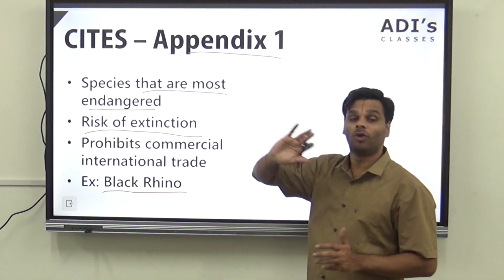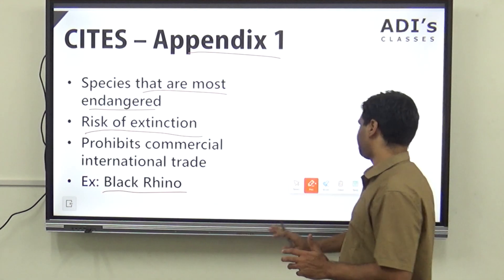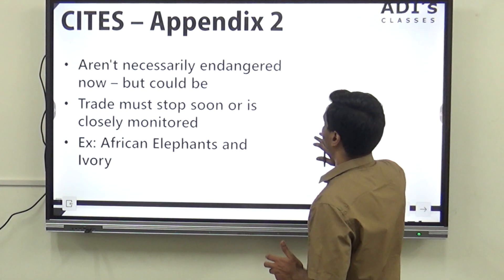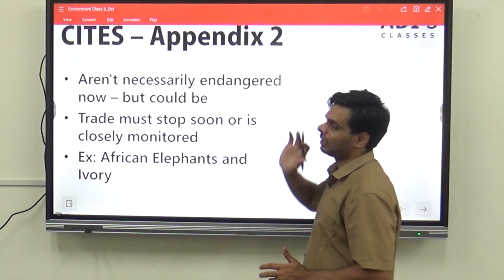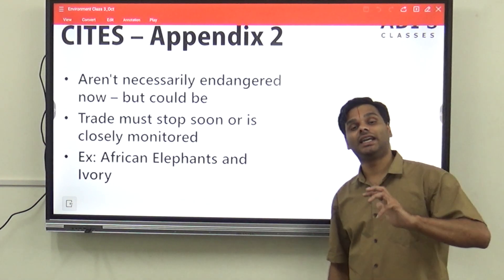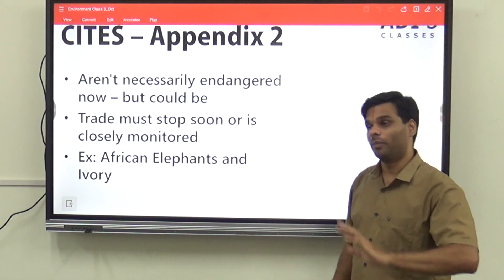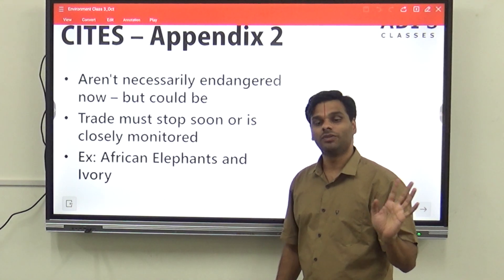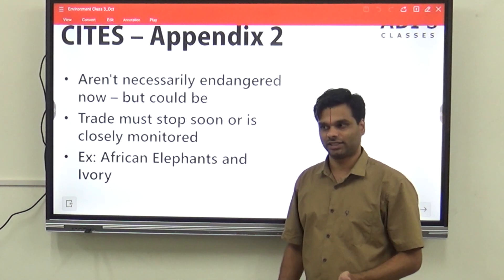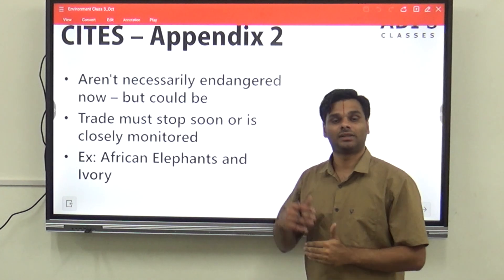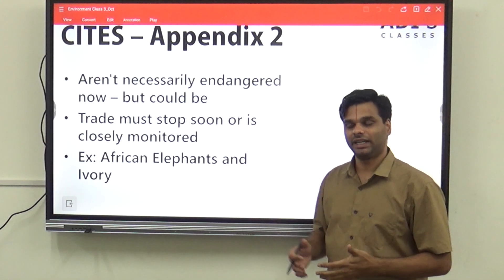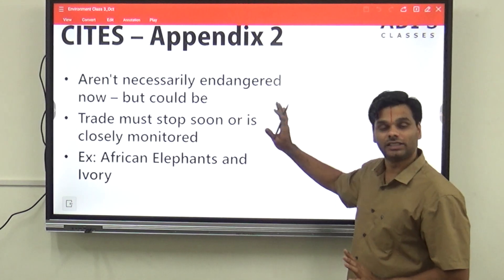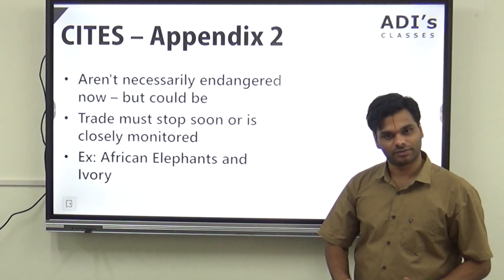Appendix one has the most endangered animals in it. Now let's look at Appendix two. These are species that aren't necessarily endangered right now, but if they continue trading in them, they will become endangered. Before that stage, they start putting them in the appendix — if you continue trading in it, then this will become endangered.